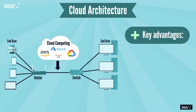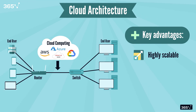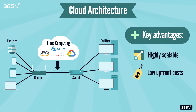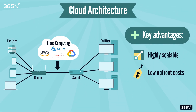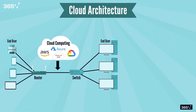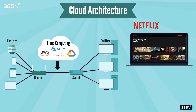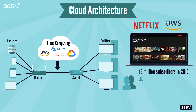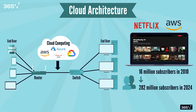There are some key advantages to building a cloud-native system. They are highly scalable — you can add storage or computing power on demand — and come with almost infinite capacity. Upfront costs are low if you start small, as you pay for only what you use. And since cloud services are located around the world, they are accessible from anywhere with an internet connection. A great example is Netflix, whose data architecture runs solely on AWS, allowing them to scale from 16 million subscribers in 2010 to approximately 282 million subscribers in 2024 without any interruption to their services.